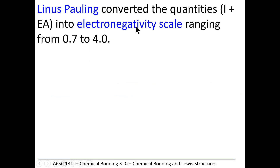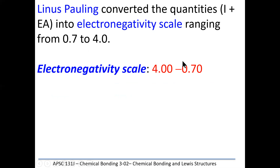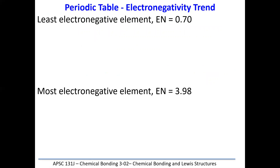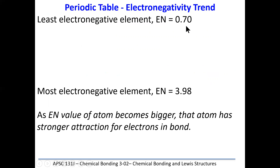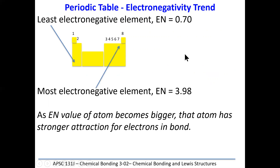Linus Pauling was one of the first people to quantify these experimentally, and he created an electronegativity scale that ranges from 0.7 to 4.0. I showed you where it is on the periodic table — you're not required to memorize these numbers, simply apply them. The least electronegative element is 0.70, and the most electronegative element is fluorine. These numbers show the relative strength with which an atom pulls on an electron.